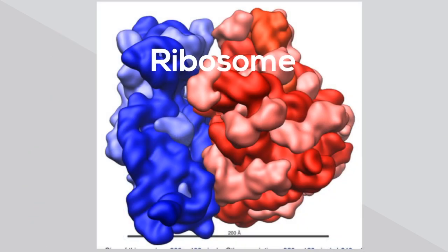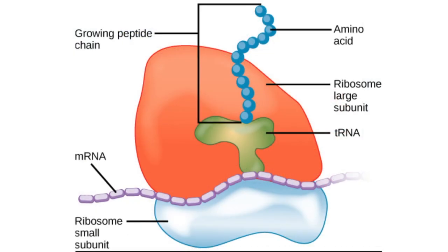Ribosomes are protein making machines and are made up of rRNA and proteins. Ribosomes consist of two major components: the small subunit which reads the RNA and the large subunit which joins amino acids to form a polypeptide chain.